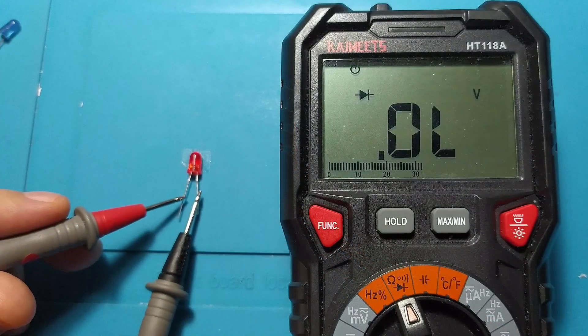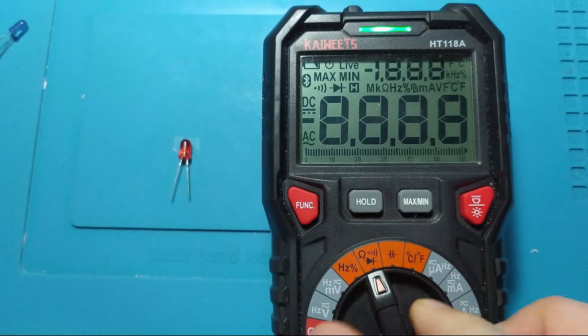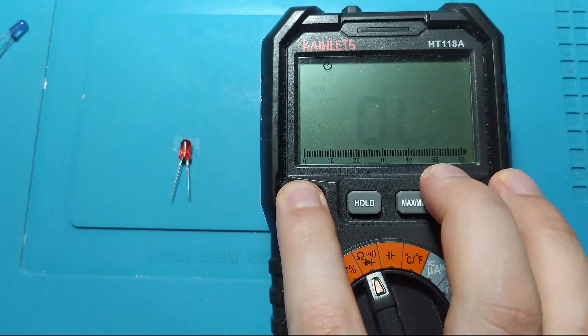How do we test an LED with a digital multimeter? For this, we select the multimeter on the diode measurement area.